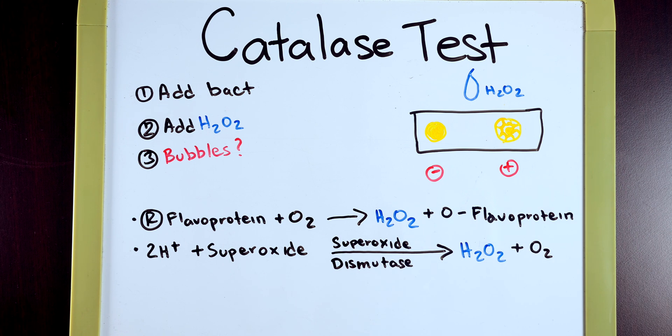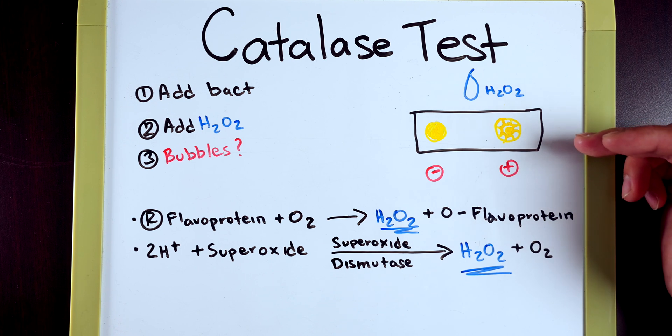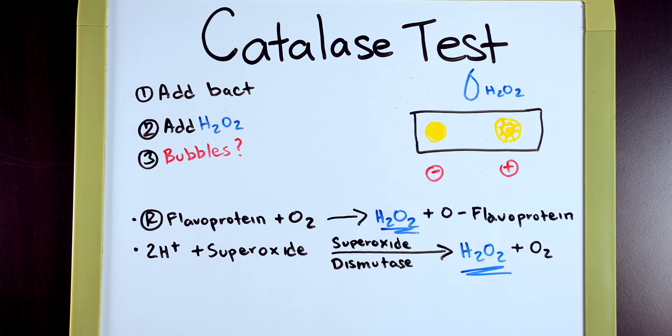So what we have is a buildup of hydrogen peroxide here and here, which is good because we have catalase to get rid of this as was indicative of our lab up here. How does catalase do this?